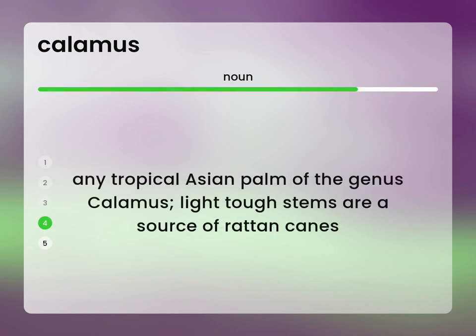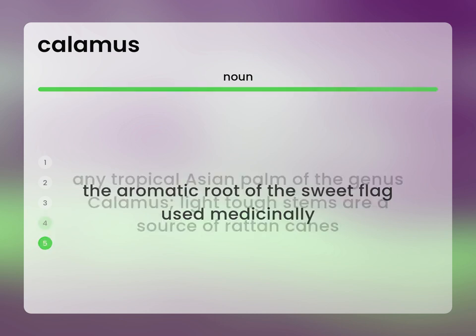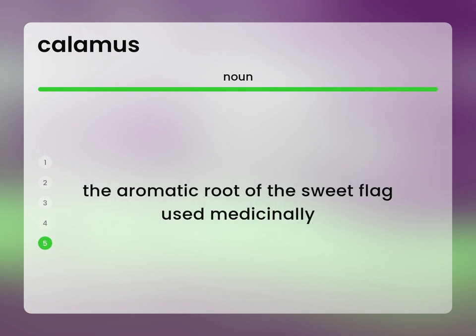Any tropical Asian palm of the genus calamus. Light, tough stems are a source of rattan canes. The aromatic root of the sweet flag used medicinally.